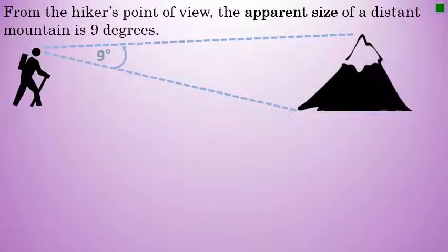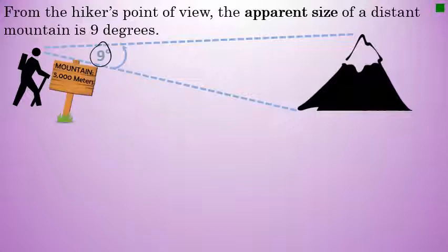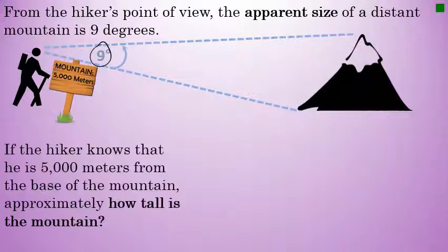Let's do that now. To review the situation: we have a hiker, and from the hiker's point of view, the apparent size, also known as the angular size, of a distant mountain is 9 degrees. Knowing the apparent size alone is not enough information to determine the actual height of the mountain. However, if the hiker knows that he is exactly 5,000 meters from the base of the mountain, that gives you enough information to determine approximately how tall the mountain is.